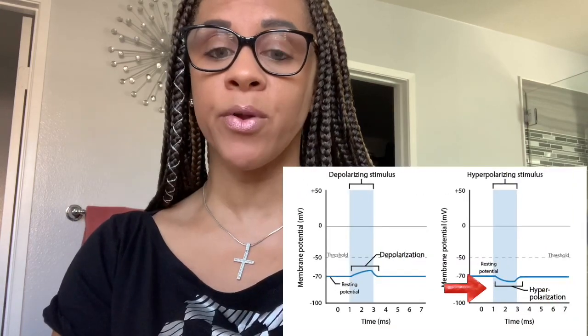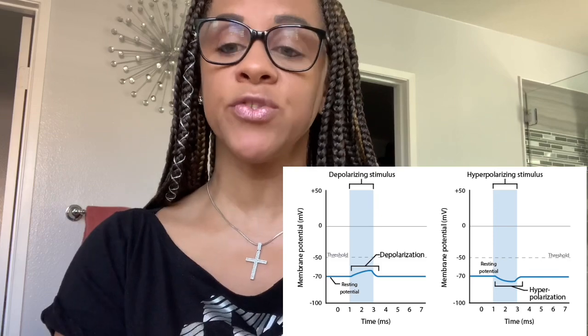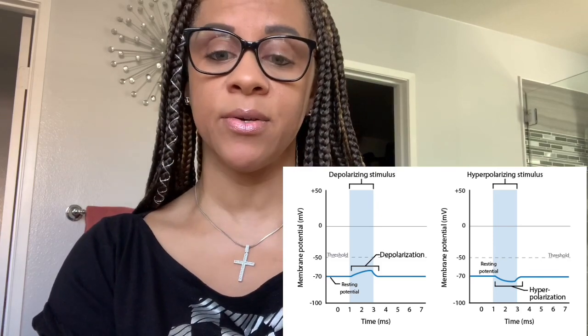The next phase is the repolarization phase. This is where potassium continues to leave the cell and causes the membrane potential to return to the resting potential. Here is where hyperpolarization begins when the extra potassium outside the cell diffuses away. This is a state in which the membrane potential is more negative than the default membrane potential. All of this originates in the axon hillock.